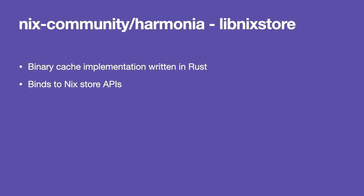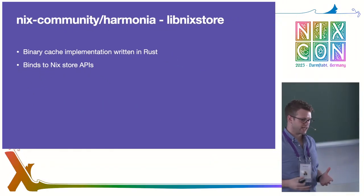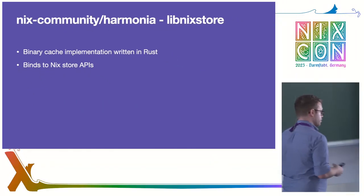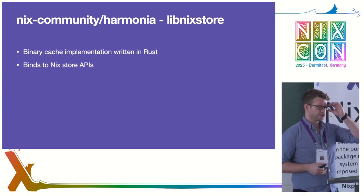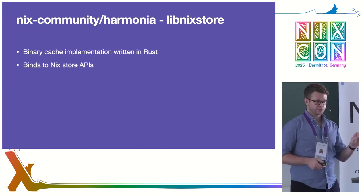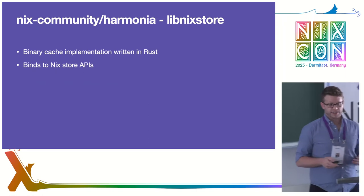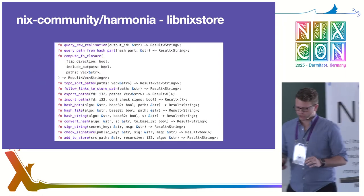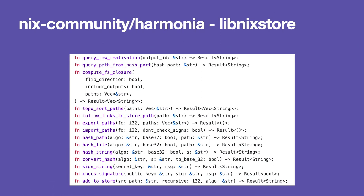I'm not the first person to make Rust bindings to Nix. There's a project called Harmonia with a Rust crate inside called LibNixStore. Harmonia is a binary cache implementation written in Rust that binds to the NixStore APIs. I knew this existed before I started and I looked at it for inspiration when I got stuck. If you look at their Rust code for bindings to the NixStore, you'll notice all inputs and outputs are primitive types, not C++ types. Now I know why — using the actual C++ types fucking sucks.